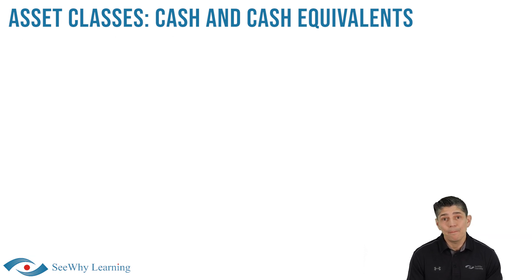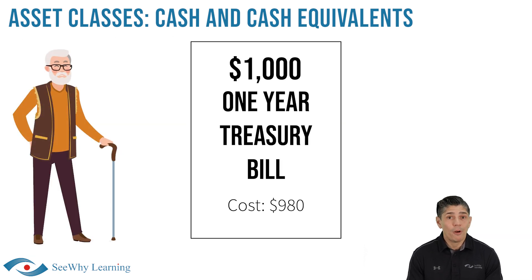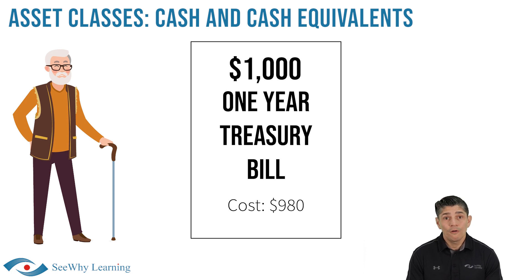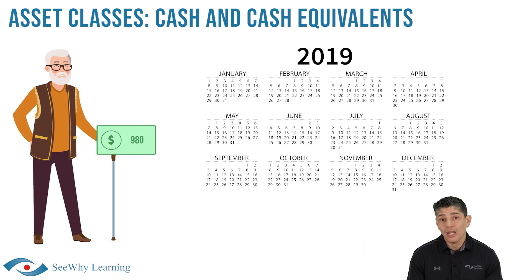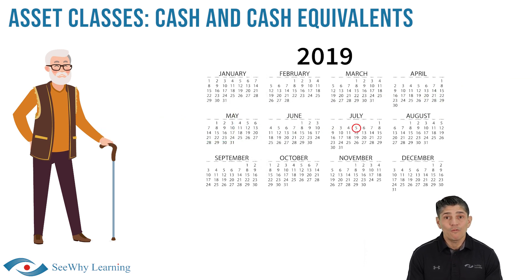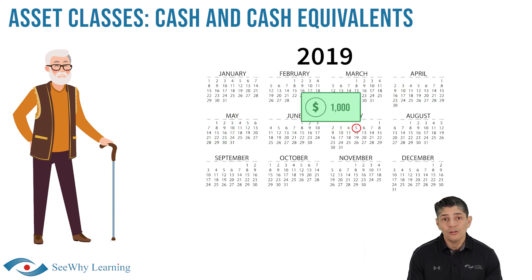For example, Curtis bought a $1,000 one-year treasury bill for $980 — in other words, he bought it at a discount. He pays $980 today and will receive $1,000 in a year, with the difference of $20 being his interest.